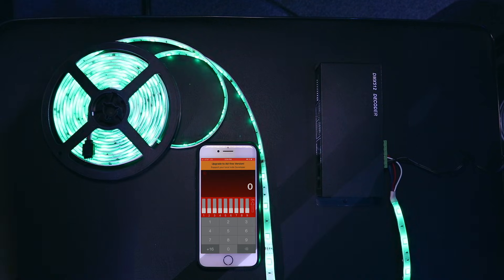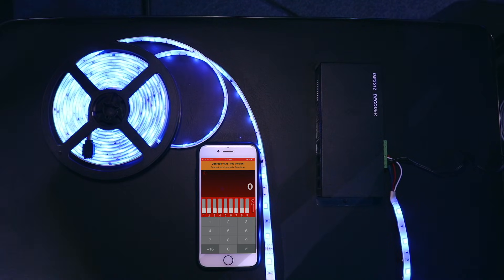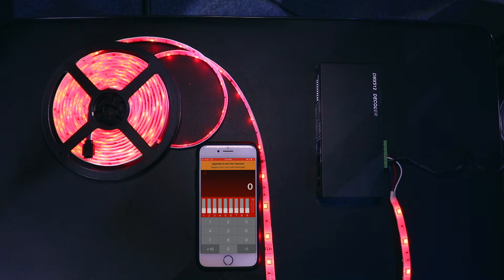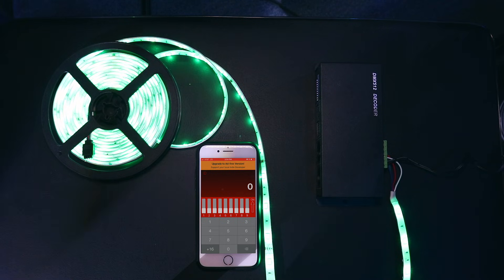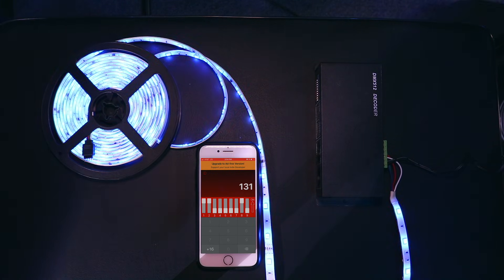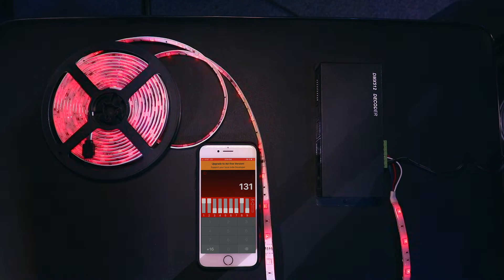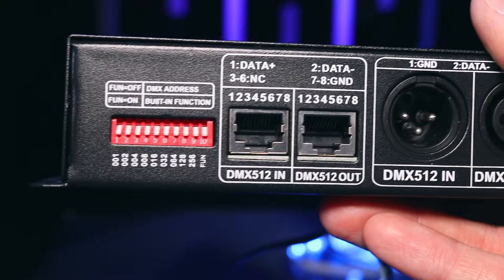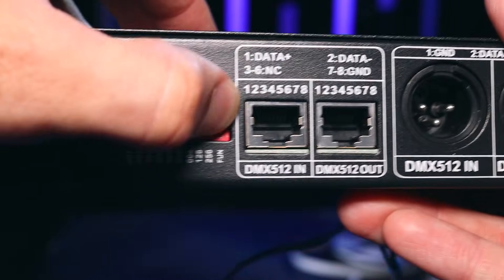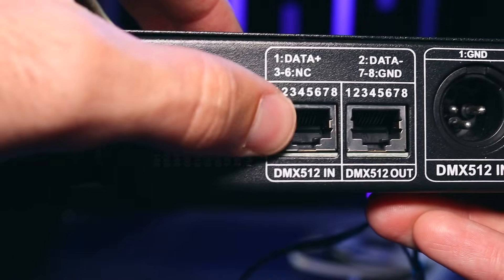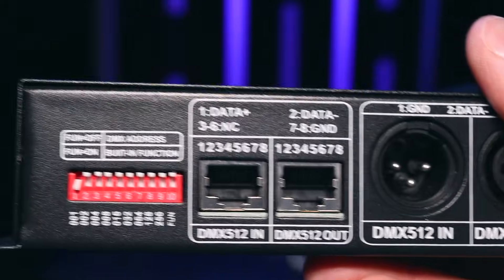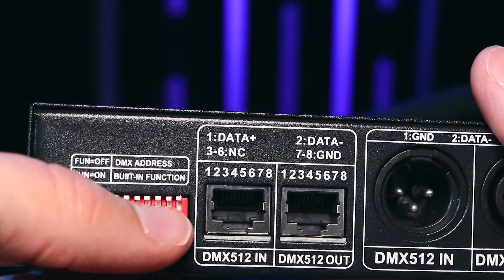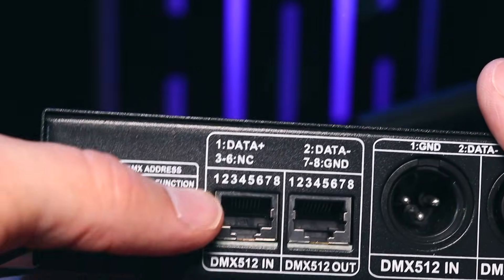I got this little DMX dip switch calculator on my phone. All you got to do is know exactly what DMX address you want to input and just type it in and it shows you exactly what to do with the dip switches on the DMX decoder or any other fixture for that matter. So I'm going to turn all of them off. You'll see the LED strip behind me turn off. Now I just got to put in the code that it told me on the app.